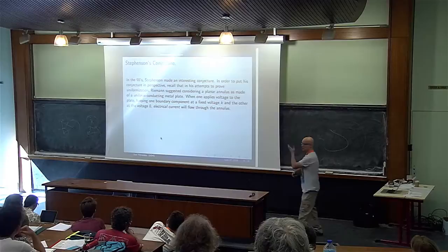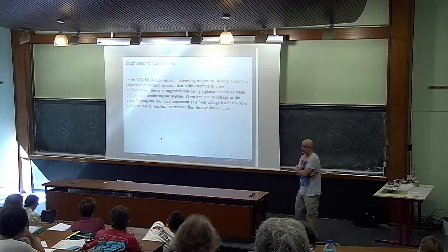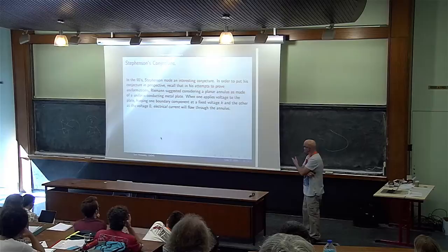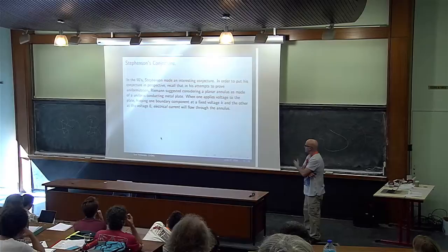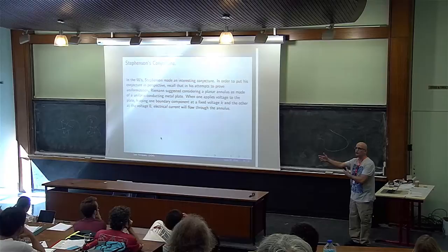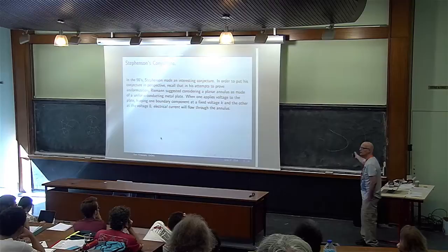I'm going to talk about a conjecture made in the 90s by Stephenson. Stephenson was in competition with Schramm and He to give a proof of Thurston's conjecture. And his approach goes back to Riemann. Imagine that you have — and I'll drop the simply connected case for now and go to it at the end — a planar annulus.